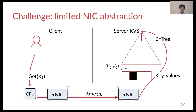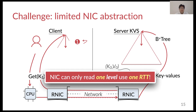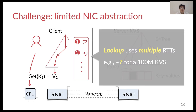To see this in more detail, let's consider using one-sided RDMA read to traverse a B-tree index. Due to the weak semantics of one-sided RDMA read, the client can only traverse one tree layer using one RDMA round-trip time. Consequently, multiple round-trip times are required to traverse a very large B-tree. This results in suboptimal performance even when one-sided RDMA is extremely fast.